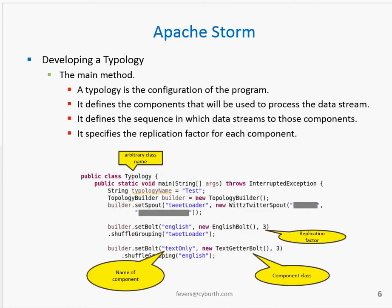To develop a STORM job, one has to create a typology. In Java, as my example uses, a typology is configured in the main method — it is a group of objects assembled and defined in the main method of a class. In this code snippet, I have given my class the name typology. In the main method, I have instantiated an object called a typology builder, which has a number of methods, most importantly set spout and set bolt. Spouts and bolts are the primary tasks of a STORM typology.